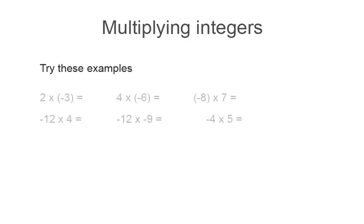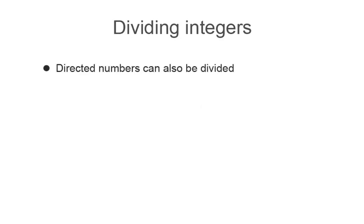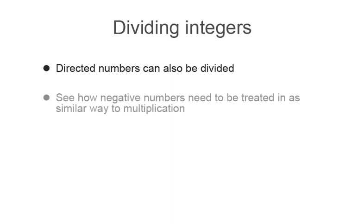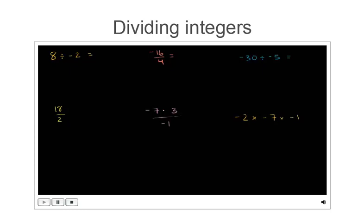Pause the video to try some of these problems. Similarly, all integers can be divided, and they are treated in a similar way to multiplication. If both numbers are positive, you get a positive answer. If exactly one is negative, you get a negative answer. If both are negative, they cancel out and you get a positive answer.